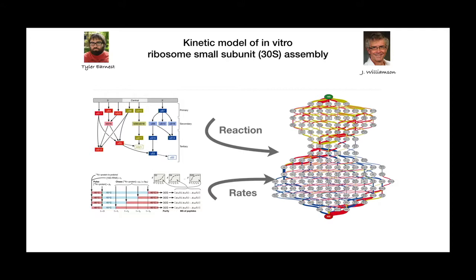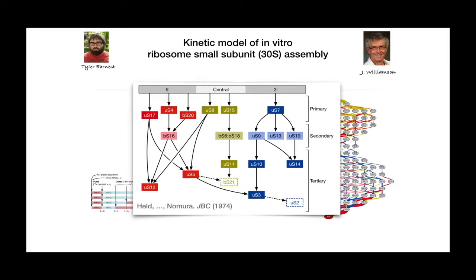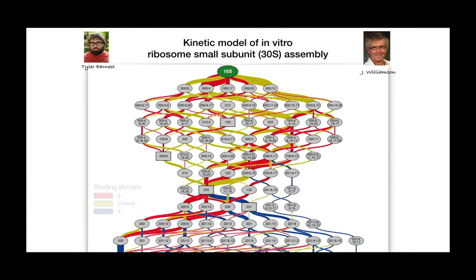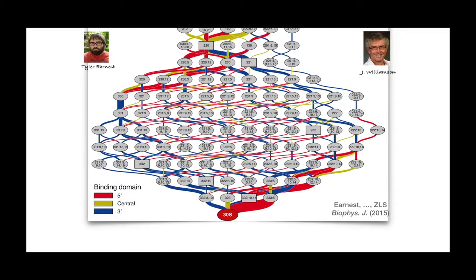Here's how we got our kinetic model for ribosome biogenesis. You have to work with one of the leaders in that field — in this case Jamie Williamson. He does pulse-chase experiments. We knew from early work of Nomura that assembly is hierarchical, with primary, secondary, and tertiary proteins. He put in primary proteins that bind directly to the RNA, then threw in secondary proteins one after the other. From that we could derive rates. Starting with the naked RNA and adding proteins, the thickness of the lines in our assembly map indicates how many simulations went that way. The assembly goes primarily from five-prime to central to three-prime, and at the end you have an intact small subunit.